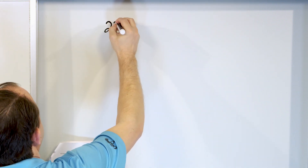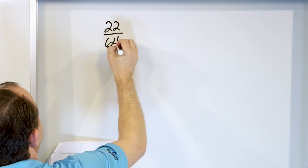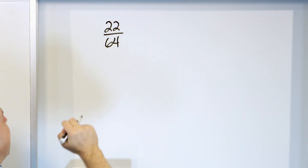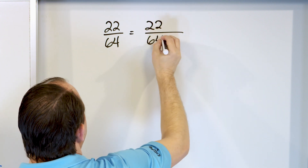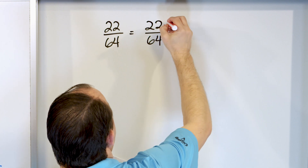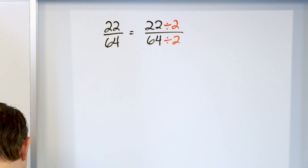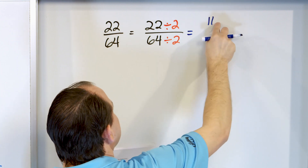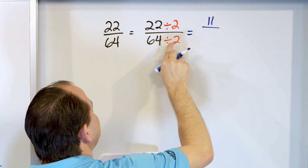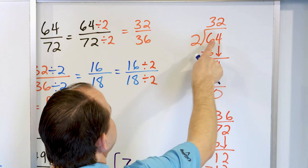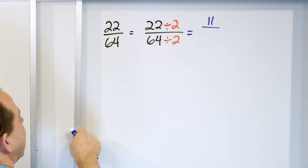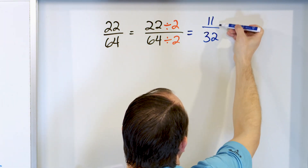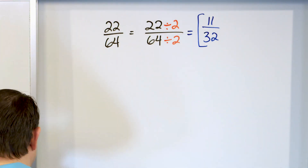Problem 8: 22/64. Both even numbers, so let's divide by 2. 22 divided by 2 is 11 because 11 times 2 is 22, and 64 divided by 2 is 32. That gives us 11/32. Can we simplify that further? No - I cannot divide top and bottom by anything to make it any simpler. So 11/32 is the final answer.